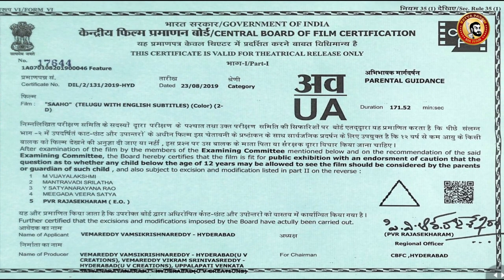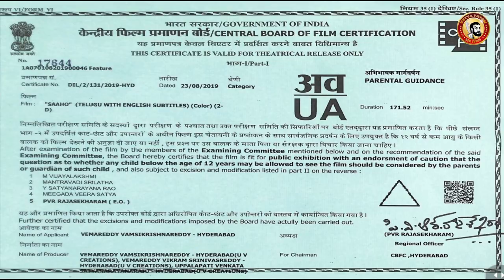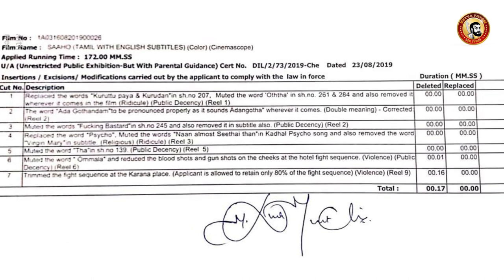We are going to go through the interval. There are sensor cuts. The SAHO has 7 cuts. If you have the duration of the screen, you can see the sensor cuts in 17 seconds.